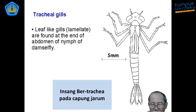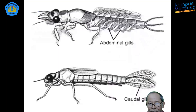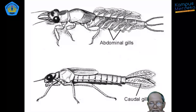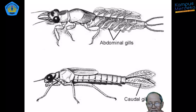Variasi berikutnya adalah insang trakea yang ada pada ujung belakang abdomen, dengan sebutan caudal. Kalau pada ruas demi ruas abdomen disebut abdominal, maka yang di ujung belakang disebut caudal. Ini pada nimfa capung jarum, yang juga memiliki insang trakea pada ujung belakang abdomennya.